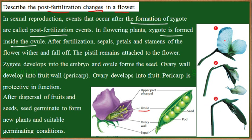Looking at the stages, we can see the petals which are present. The main role of petals is to attract the pollinating agents, so once fertilization has taken place, there is no requirement for these petals and they fall off. In some cases, even the sepals would fall, but in the case of pea the sepals remain. The androecium would fall off. After fertilization, sepals, petals, and stamens of the flower wither and fall off.